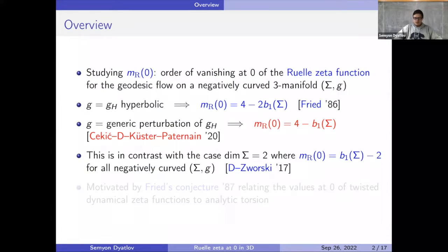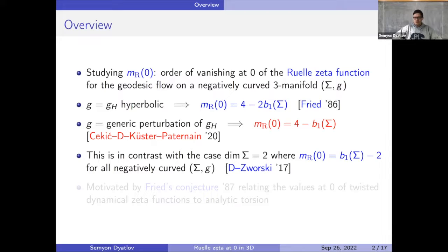For a while Zworski and I thought that this topological determination might hold in all dimensions — not that we had a proof. But it turns out that already in dimension three the situation is very different. A perturbation changes this quantity to something that's still topologically determined, but it's a generic perturbation, so the order of vanishing really depends on things beyond just topological information.